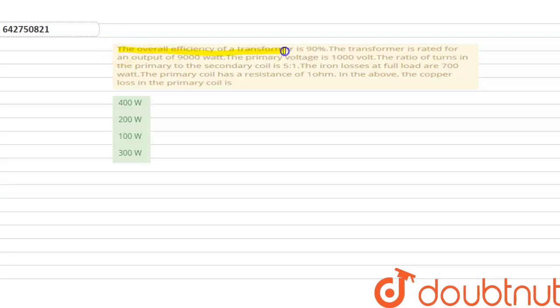The overall efficiency of a transformer is 90%. The transformer is rated for an output of 9000 watts. The primary voltage is 1000 volts. The ratio of turns in the primary to the secondary coil is 5:1. The iron losses at full load are 700 watts. The primary coil has a resistance of 1 ohm. In the above, the copper loss in the primary coil is?